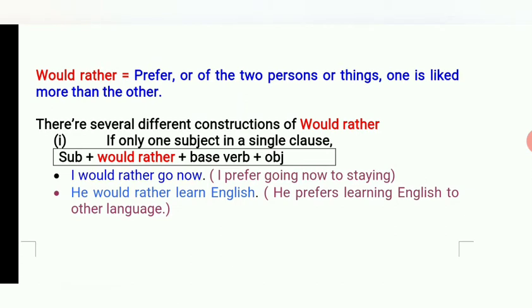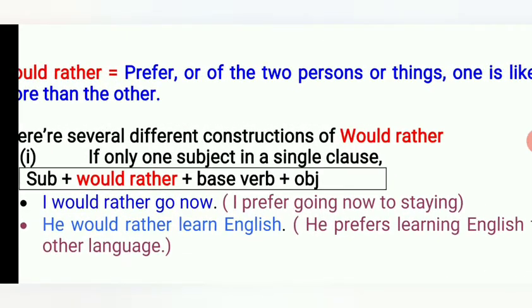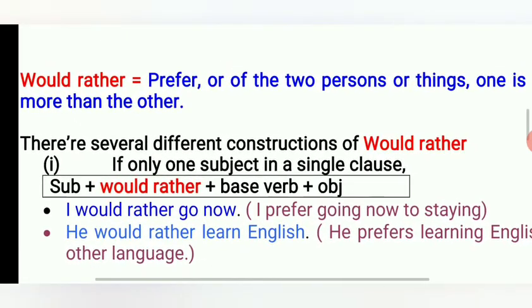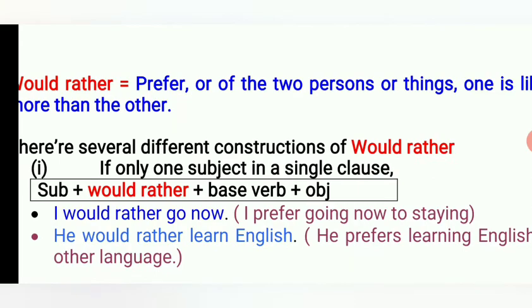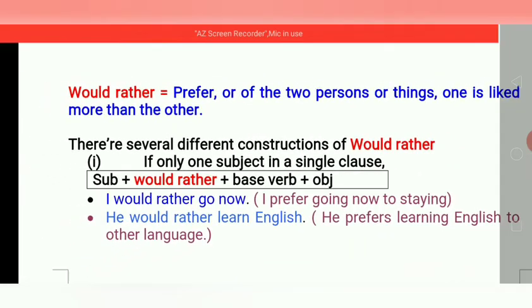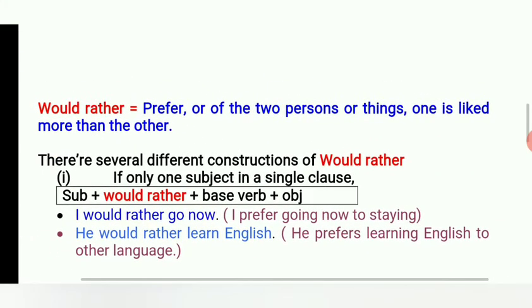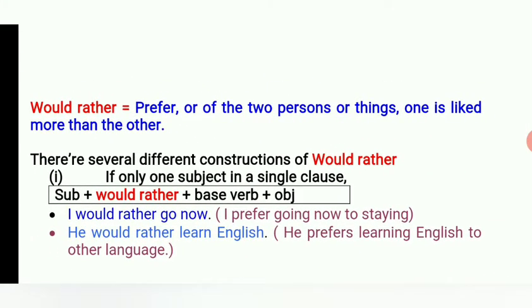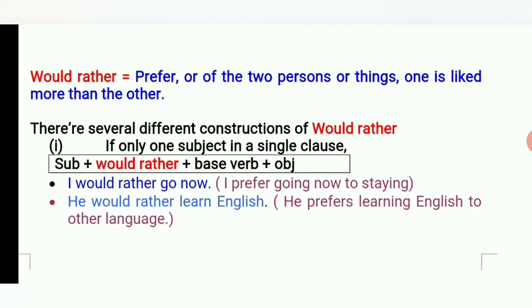Actually, 'would rather' is a modal auxiliary. That means 'prefer' — of the two persons or things, one is liked more than the other. There are several different constructions of 'would rather.'